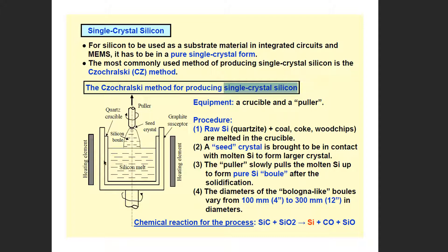This method is made by manufacturing techniques. We use a furnace to melt the silicon. Then we use a pillar with a seed crystal and dip it into the melt. We rotate the pillar to pull out the silicon. We use a pure silicon metal for the seed crystal.